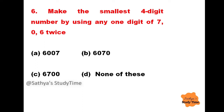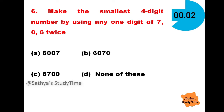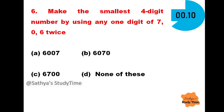Question 6: Make the smallest four-digit number by using any one digit of 7, 0, 6 twice. Your time starts now. The answer is 6007.